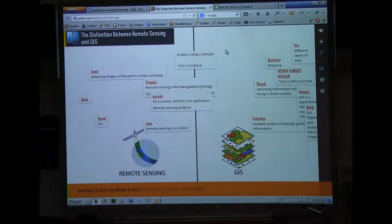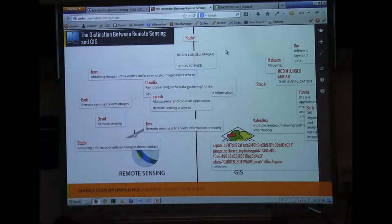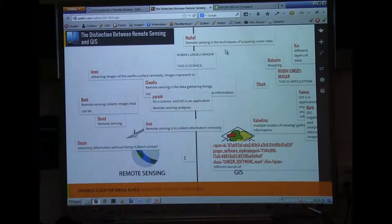Remote sensing is all about gathering information or sensing something from a distance or being remote. Whereas if we break down the term GIS or geographic information systems, I'd like to firstly look at the word system.